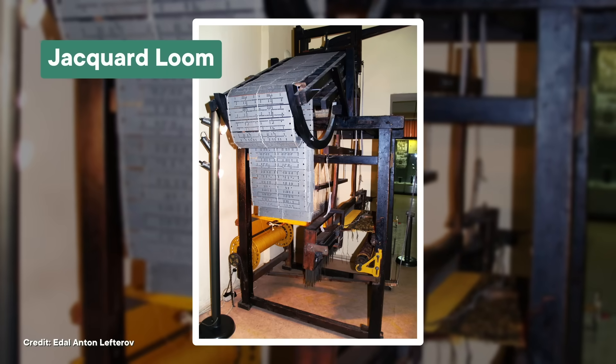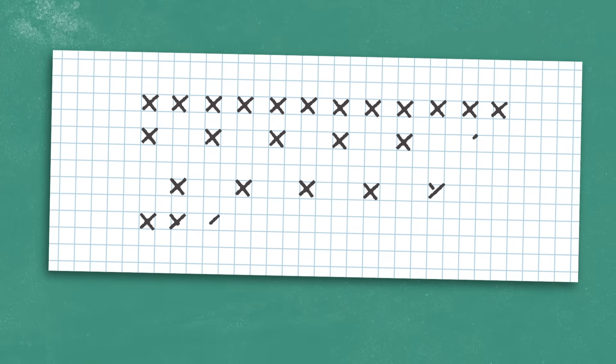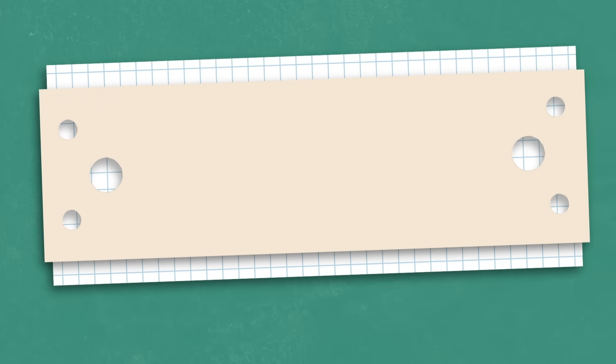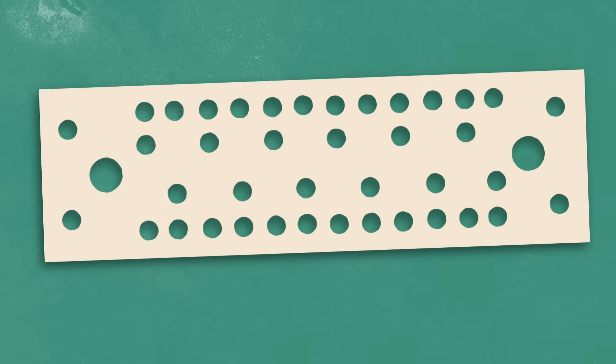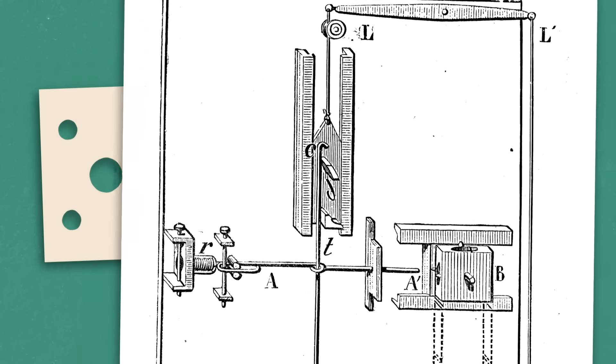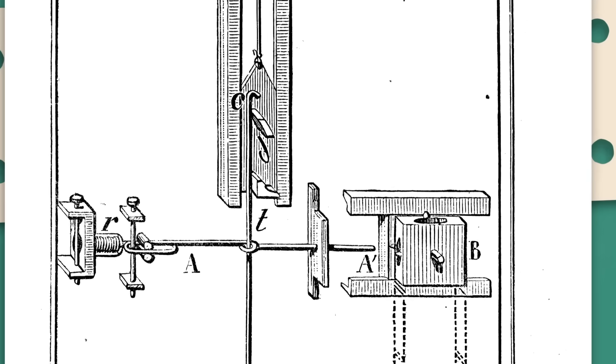The Jacquard loom changed everything, because it basically allowed the weaver to raise and lower the warp as needed without the need for a drawboy. But what does this have to do with computers? It's how Jacquard figured out how to get his machine to produce a specific pattern: a rotating carousel of punch cards. First, a designer would design the pattern on gridded paper. That paper was then given to another person who'd actually punch out the appropriate spaces on the punch cards. Each punch card represented the instruction for a given line in the design — a punch told the machine to lift a specific thread, and no punch meant leave it be.